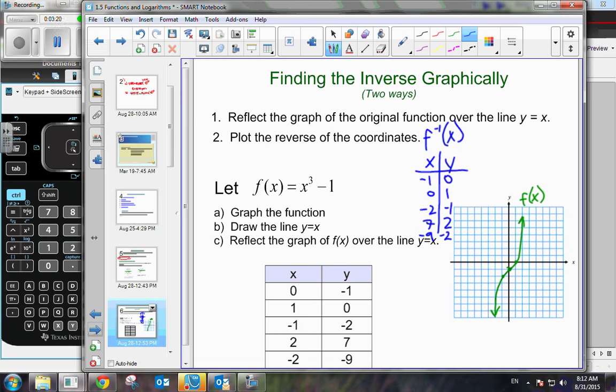So negative 1, 0, then 0, 1. Negative 2, negative 1. Then up to 7, 2. And plotting the remaining coordinates. So it should look something like that. And here's the inverse of x.